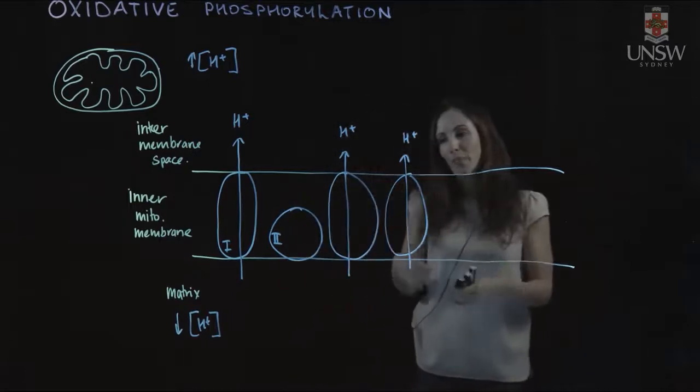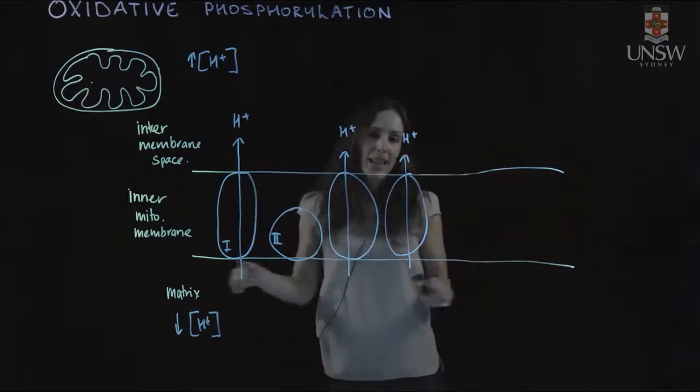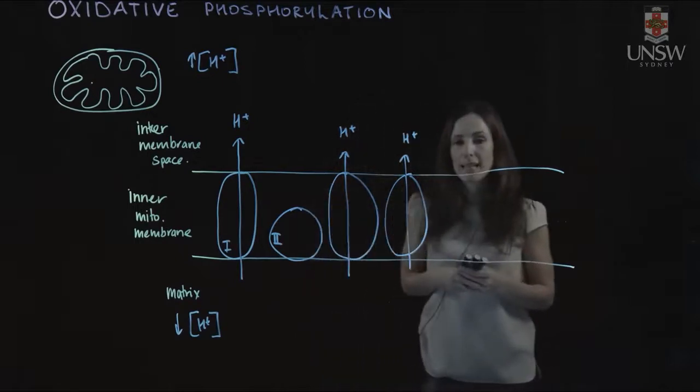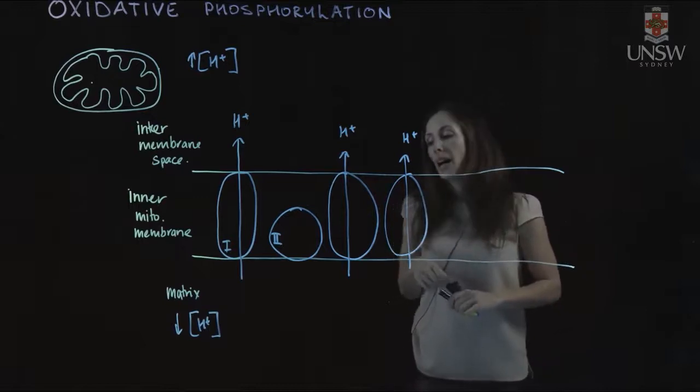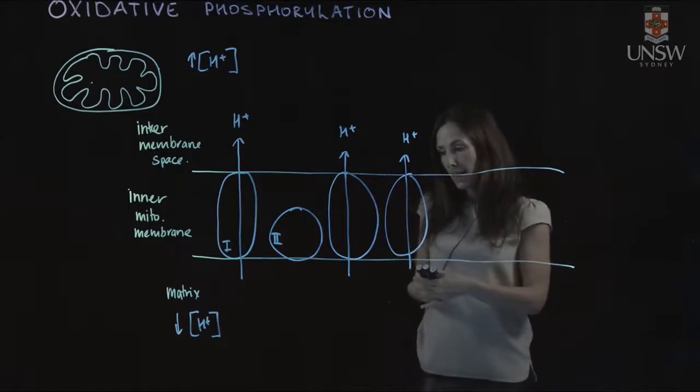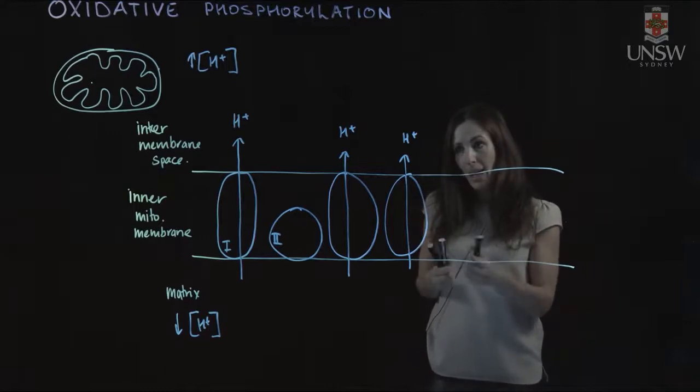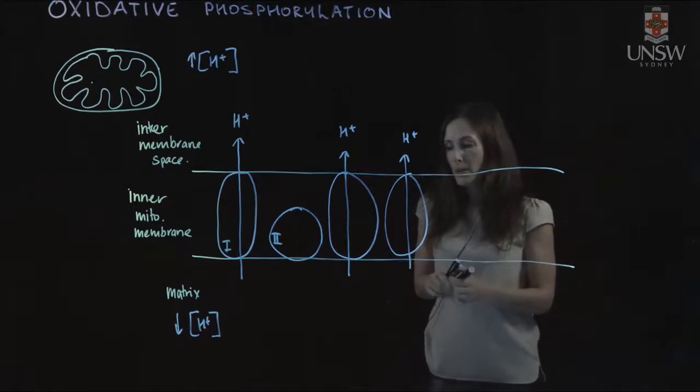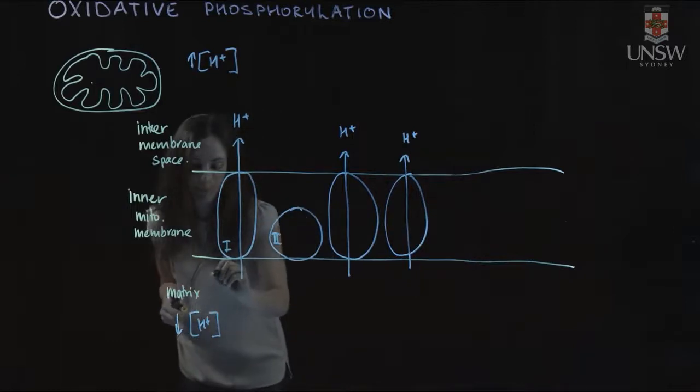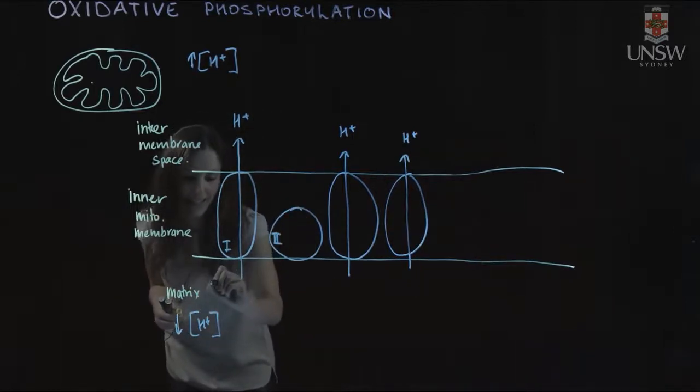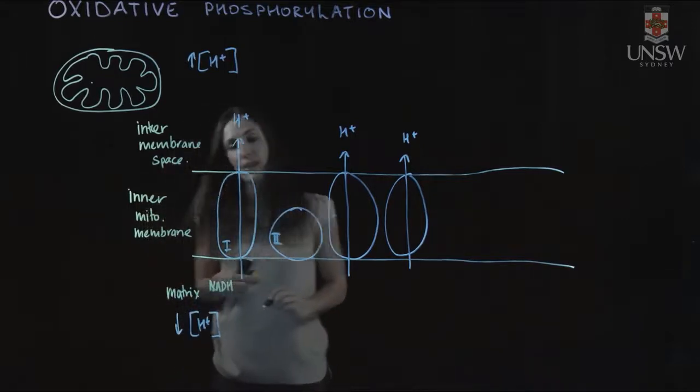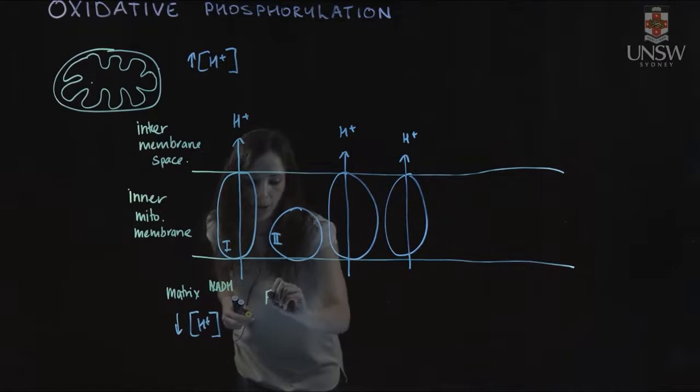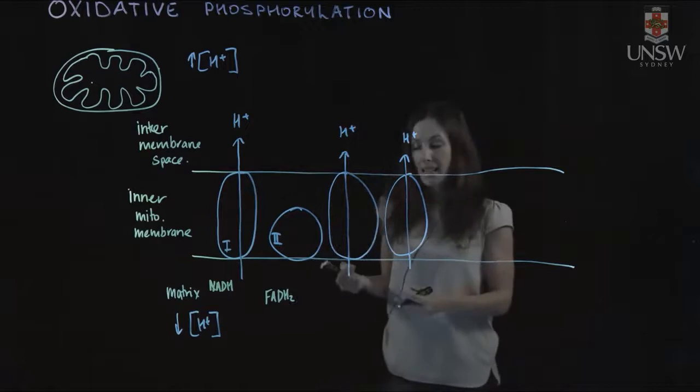Where do the electrons come from that form part of this electron transport chain? They come from two places. When fuels such as carbohydrates are oxidized in the cell, electrons are passed from those fuel molecules onto NAD+ to give us NADH. This is produced in reactions such as glycolysis. We also get FADH2 in processes such as the TCA cycle.